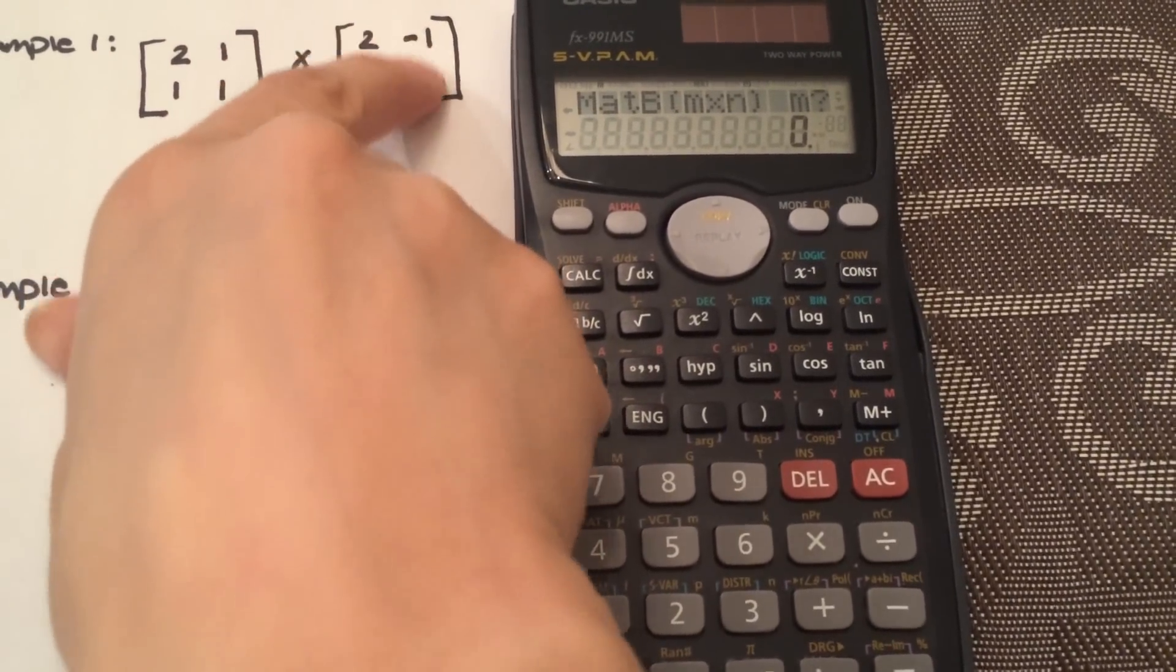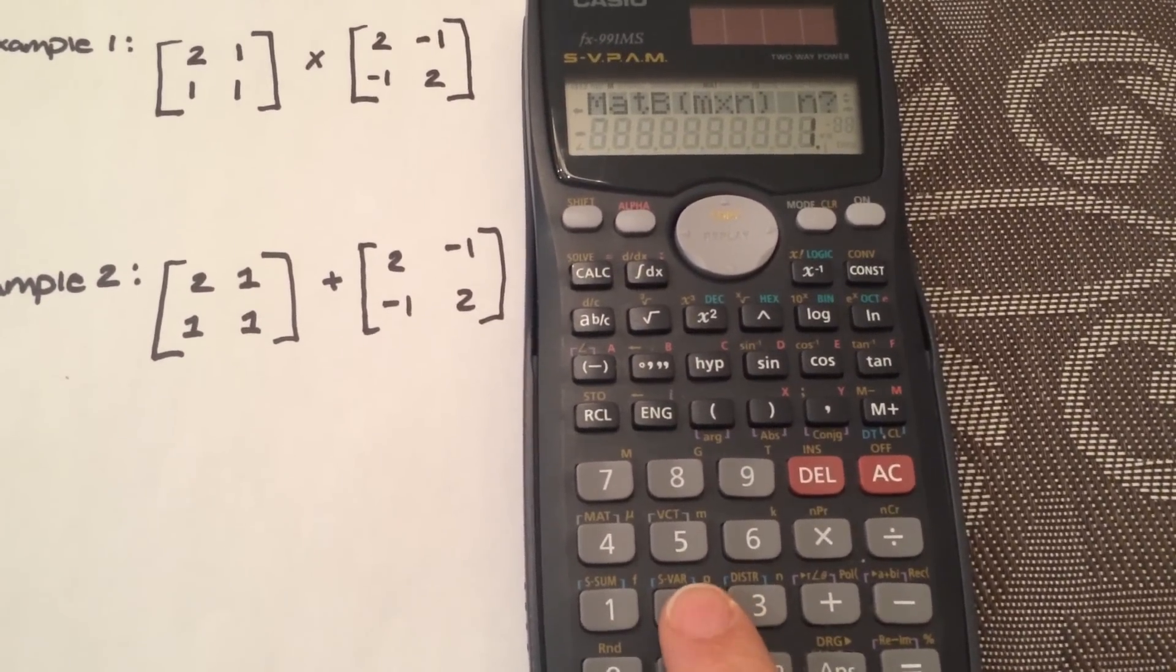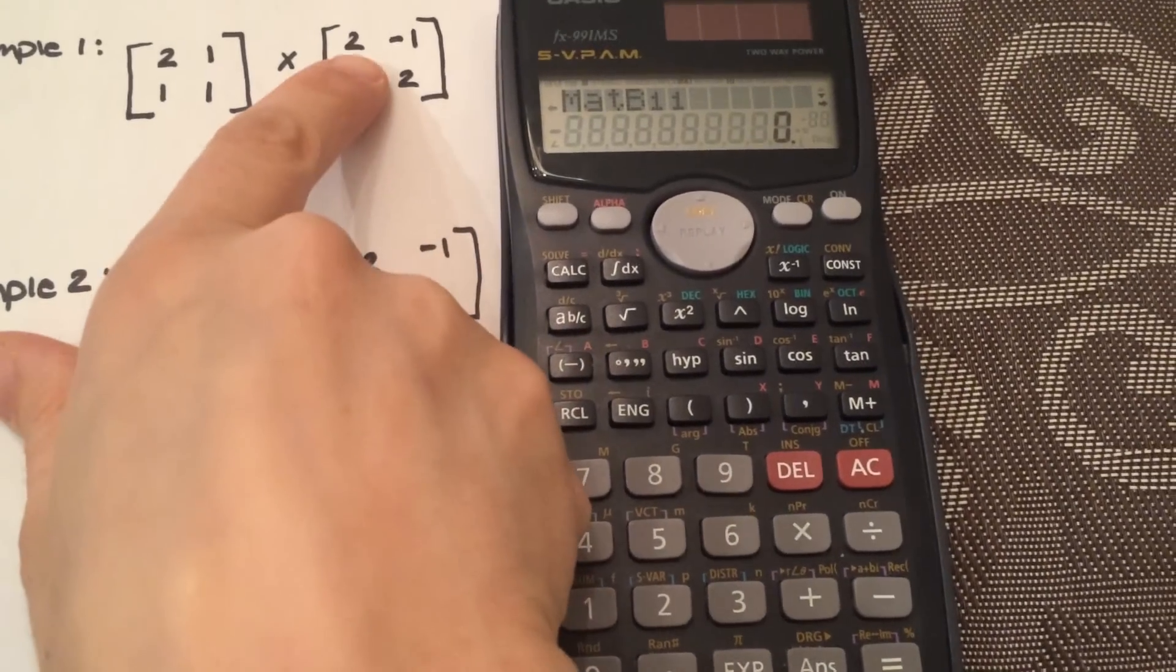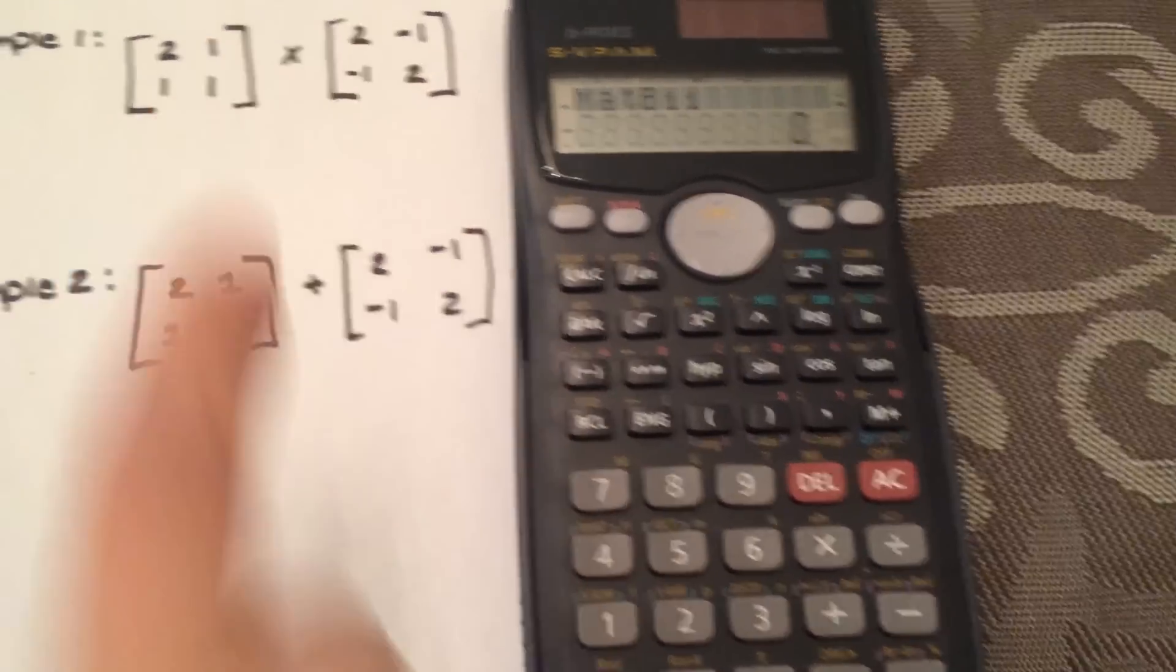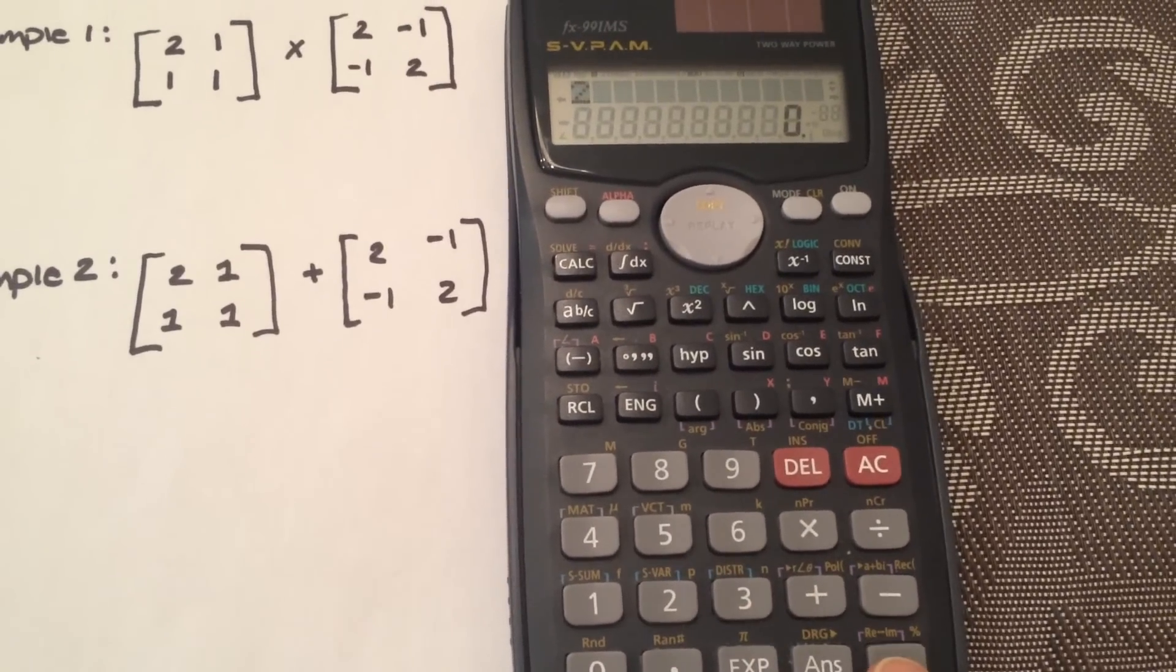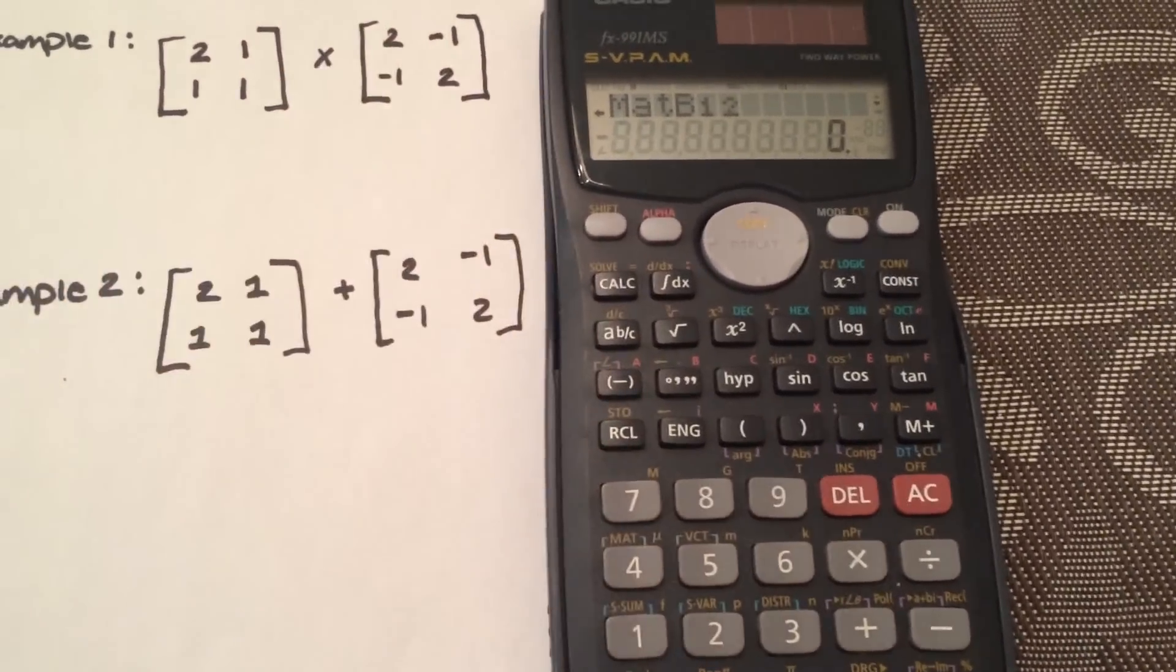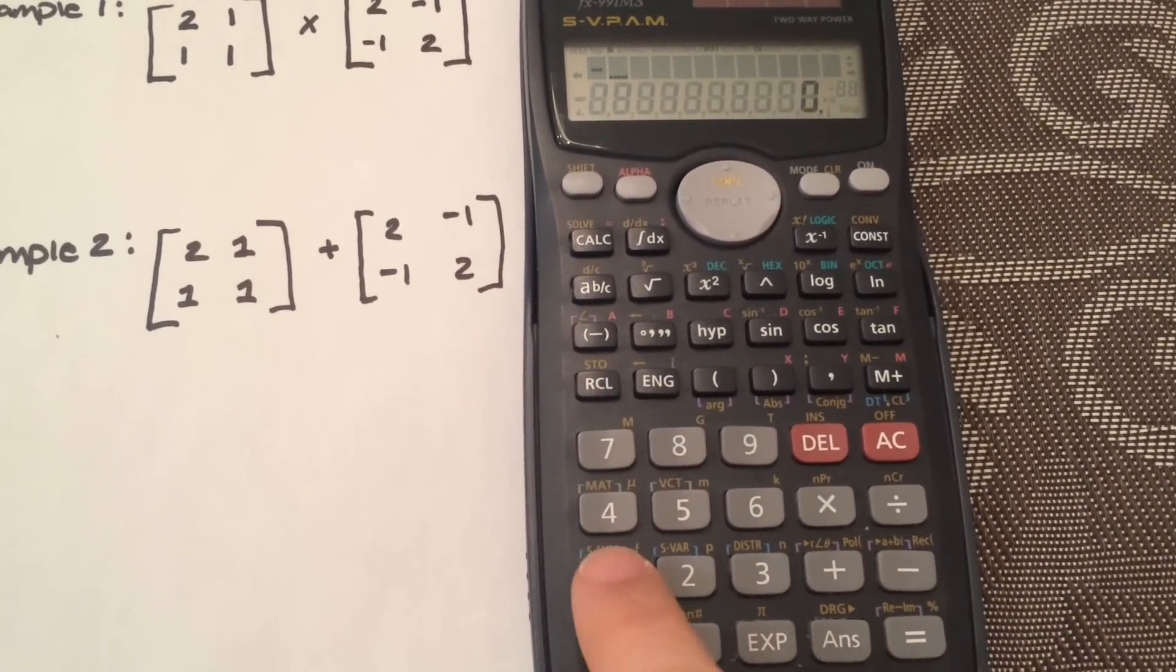So there's two rows and two columns, so hit 2 by 2. So now it's asking for the actual values. So B11, first row, first column, so select 2. Equals. And then the second one is negative 1, so you're going to hit negative 1.